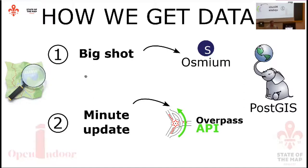At first we got about 73,000 buildings that had at least one indoor element inside. Of course that was not enough because many buildings had just one indoor data point and were not really interesting. So we decided to go deeper in the filtering by applying a kind of density metric: for instance, if you have a 50 square meter area with at least five to ten indoor elements, we consider the density sufficient to select and keep it in our database.